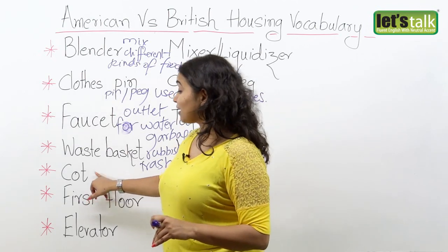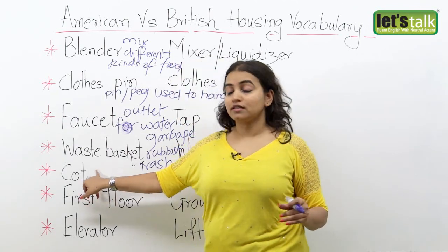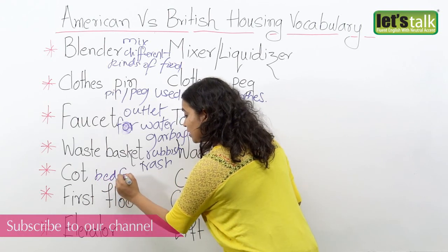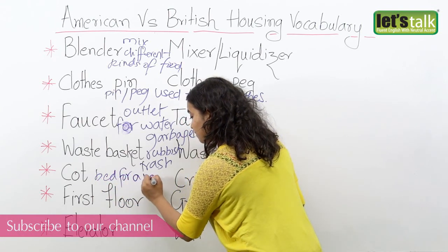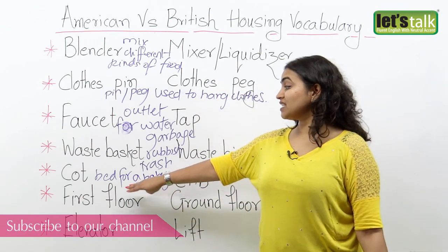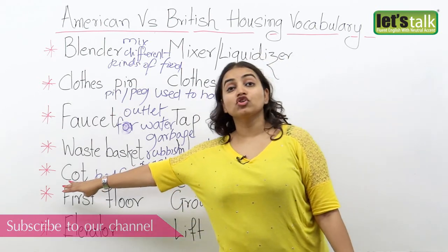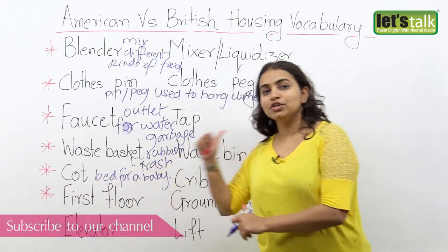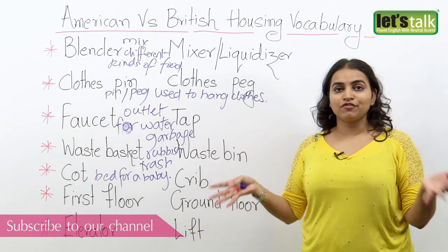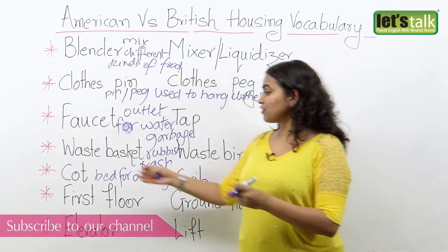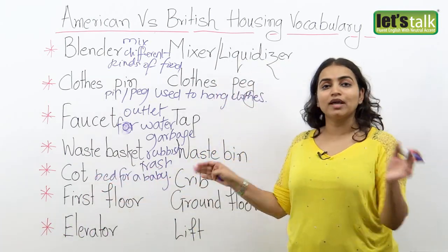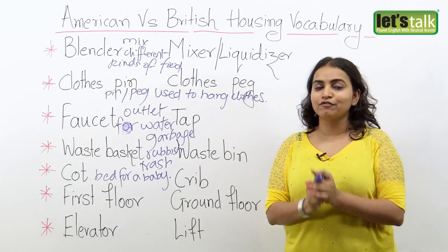We also have the word cot — this is a bed for a baby in America. So you might say 'the baby is asleep on the cot.' But in the UK we call that a crib. So you would say 'this crib is made for the baby.' That's the difference between cot and crib when talking about a small bed for a baby.